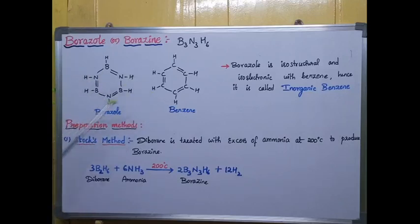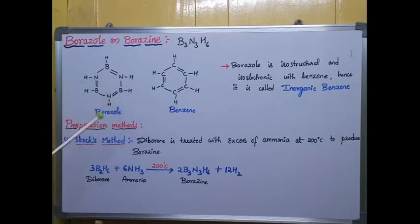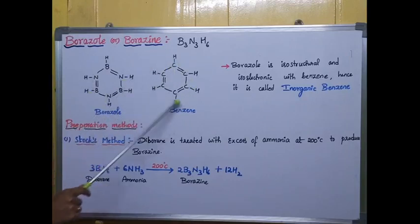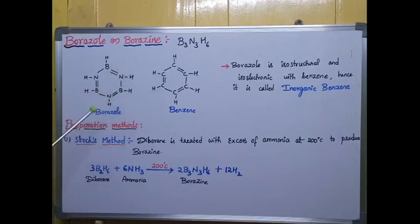The structure is similar and you can observe the same number of electrons in both structures — they are isoelectronic in nature. Inside benzene and borazole you have six sigma bonds from the six hydrogen atoms, plus six more sigma bonds inside the ring, giving twelve sigma bonds total, and three pi bonds. In benzene also you can observe twelve sigma bonds and three pi bonds. So the number of bonds and number of electrons are similar, confirming they are isoelectronic.